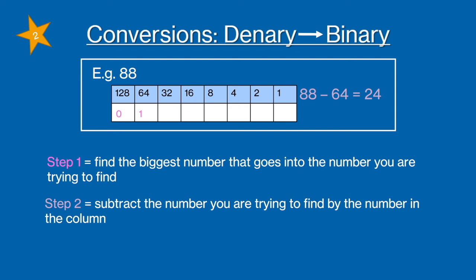And we're going to carry on doing these steps. So does 32 go into 24? No, so put a zero. Does 16 go into 24? Yes, so we're going to put a one. And step three is just to continue these previous steps for the rest of the table.